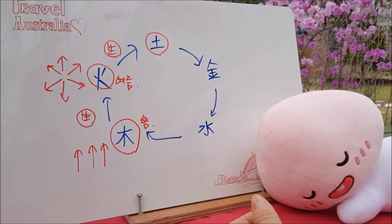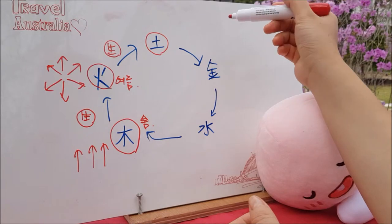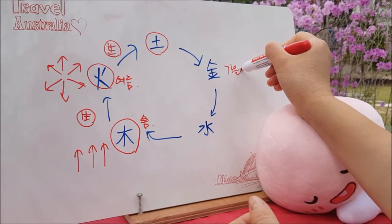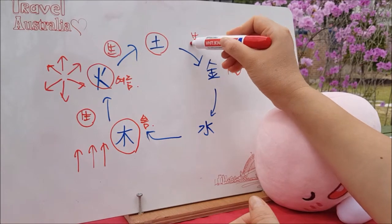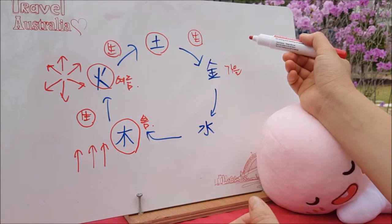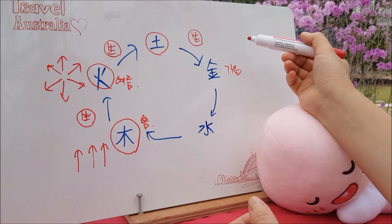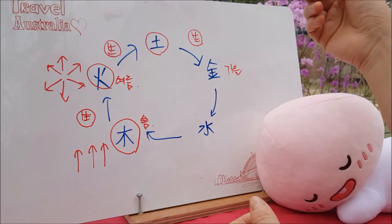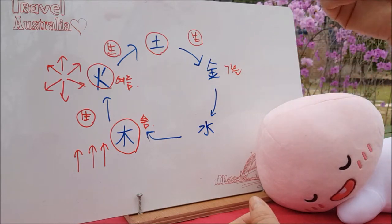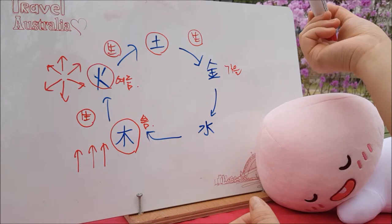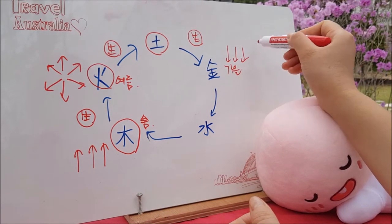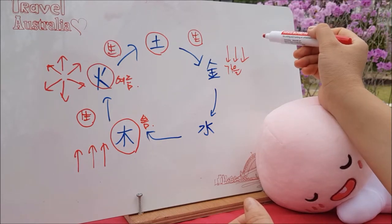각 계절을 관장하는 토가 마무리를 짓는 역할을 하는 거라면, 이제 가을을 뜻하는 금기운으로 설명을 넘기겠습니다. 토는 금을 생해줍니다. 가을은 곡식을 거둬들이고 과일이 익어가는 계절이죠. 뭔가를 시작하기보다는 가을은 거둬들이고 기운이 쇠하는 쪽이기 때문에 겨울을 대비하는 계절이에요. 그래서 에너지의 흐름은 아래로, 아래로 다운이 됩니다.